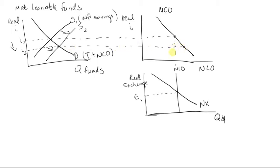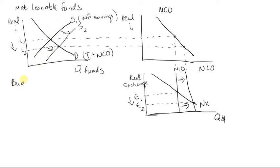That decrease in the real interest rate gives us a new point in the net capital outflow line, which in turn shifts the supply in the foreign currency exchange market. We get a new intersection between supply and demand at a lower real exchange rate. So the currency depreciated.